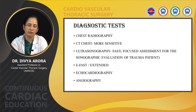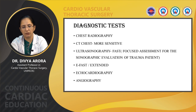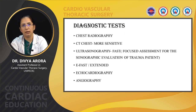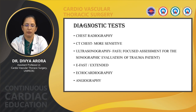Regarding diagnostic tests, we first focus on chest radiography. It is very helpful, useful, and easily available. It can help identify injuries, and the location of rib injury can direct us to the underlying injury. Upper ribs may cause injury to great vessels; clavicle fracture may lead to pulmonary or cardiac contusions; lung fields may show hemopneumothorax; and mediastinal widening may indicate underlying cardiac tamponade. Soft tissue injury may show subcutaneous emphysema.